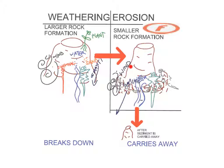Erosion can happen by wind, water, ice, and gravity. All of the little sediments that had been broken down from the larger rock formation by these elements and forces — wind, water, ice, and gravity — carry away the sediment that's been weathered down. So erosion means to be carried away; it does not mean to break down. Weathering means to break down. Erosion means to carry away. And as you can see here, that is the smaller rock formation after all of this sediment has been carried away.